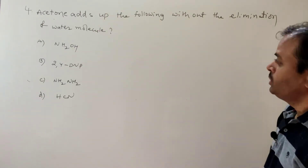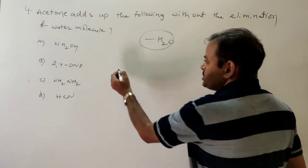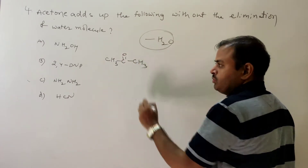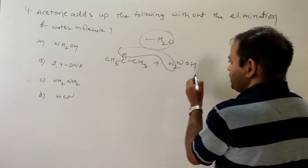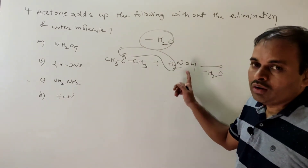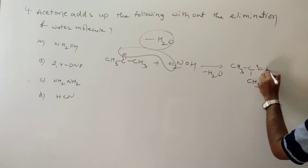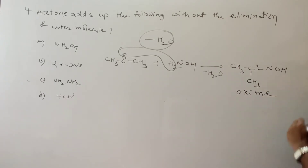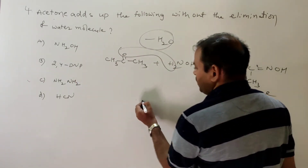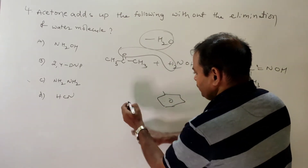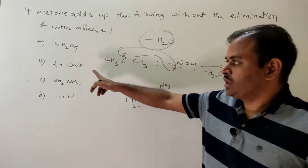Fourth question: acetone adds to which compound without the elimination of a water molecule? Acetone (CH3COCH3) with hydroxylamine (NH2OH) — loss of H2O takes place, giving an oxyme (CH3C(=NOH)CH3), called acetoxyme or ketoxyme. With 2,4-DNP (2,4-dinitrophenylhydrazine, NH-NH2 with nitro groups at positions 2 and 4), loss of H2O also occurs, giving the corresponding 2,4-dinitrophenylhydrazone.